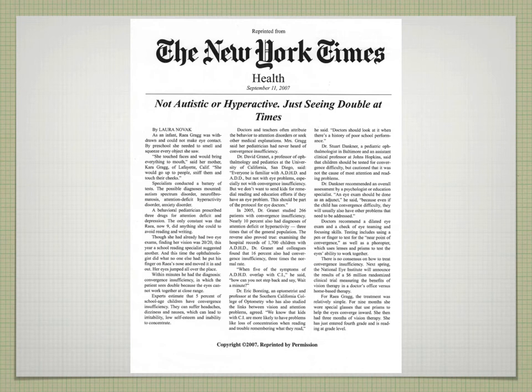One of the hot topics today is autism. In 2007, the New York Times published an article suggesting that maybe it isn't autism — maybe it's just seeing double. In almost all cases of patients like this, we can restore their vision to single vision and eliminate the autistic diagnosis.